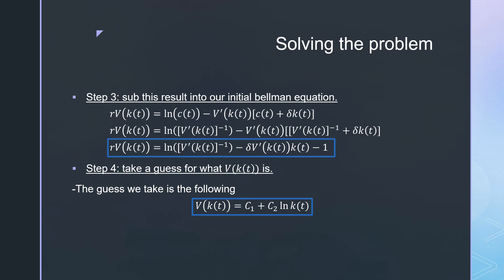Next, we're going to take a guess for what V(k(t)) is. This is the guess and verify procedure, and we're just going to assume that it is similar to our instantaneous preferences here, however it's going to be entering in linearly with a constant.